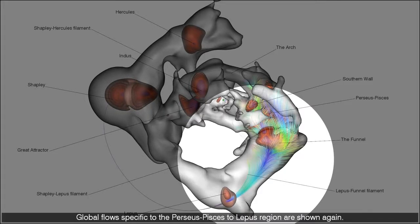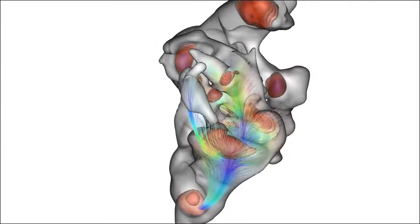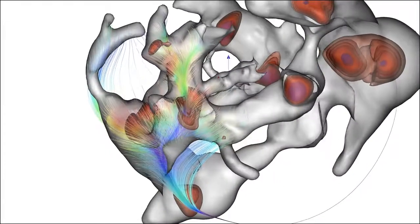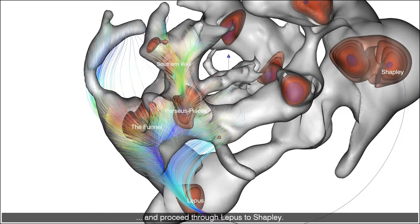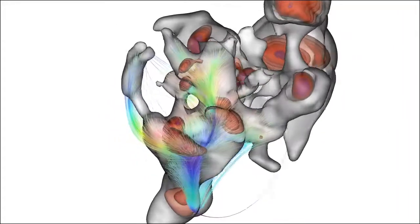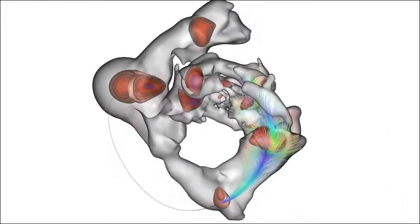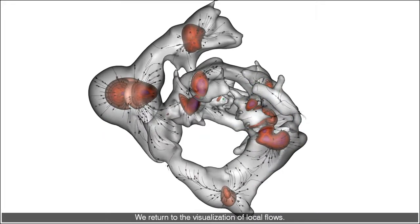Global flows specific to the Perseus Pisces to Lepus region are shown again. Global flows from Perseus Pisces and the southern wall gather at the funnel and proceed through Lepus to Shapley. We return to the visualization of local flows.